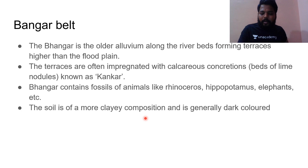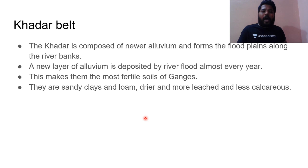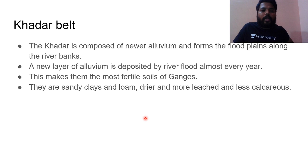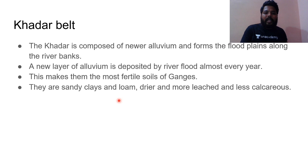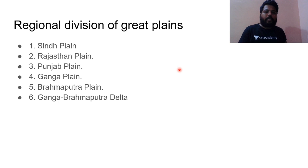The Khadar belt is composed of newer alluvium and forms the flood plains along the river banks. A newer layer of alluvium is deposited by river floods almost every year, making these the most fertile lands of the Ganga Plain. Khadar belts have sandy clays and loam with very low calcareous concentrations, resulting in high productivity and very fertile soils.